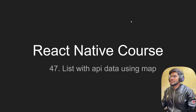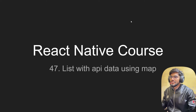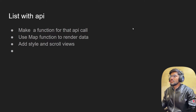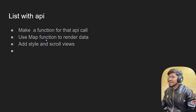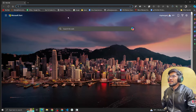Hey guys, welcome back to the React Native course. In this video we are going to talk about how to fetch a GET all request. Basically we are going to make an API call and render the data using the map function. In the next video we are going to use FlatList to render that data.